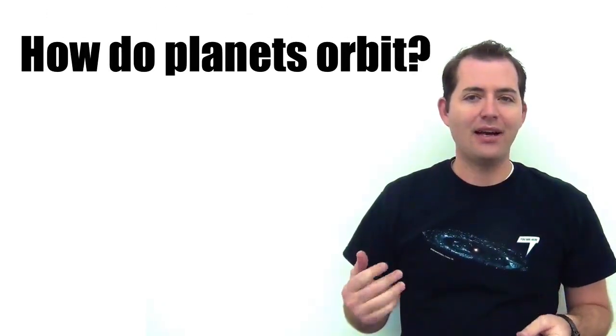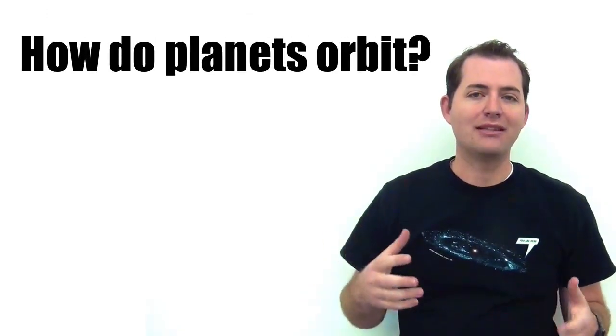How do planets orbit and are there any specific ways that we can use to describe what's happening when they orbit?